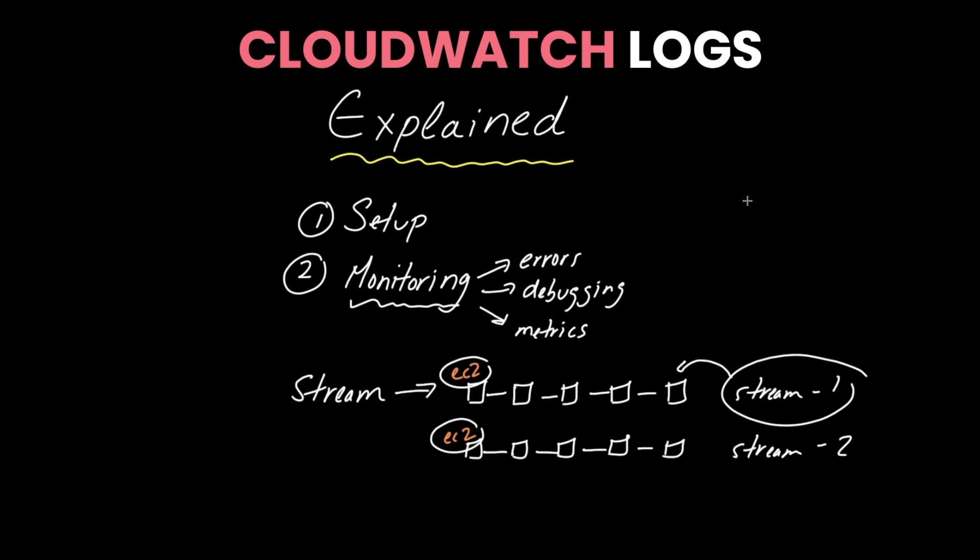The reason that streams are important is because it makes sense if you think about it. Typically in an application architecture, you have a bunch of different instances. These can be like all EC2 instances, for example. And typically you have a load balancer up here and traffic is coming here.